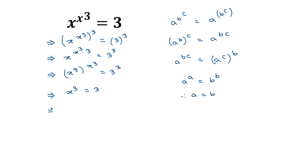Now taking the cube root of both sides, the cube root of x cube gives x, and the right side gives cube root of 3. The cube and cube root cancel, so the value of x is equal to the cube root of 3. This is the solution of our given equation. If you like this video please subscribe to my channel. Thanks for watching.